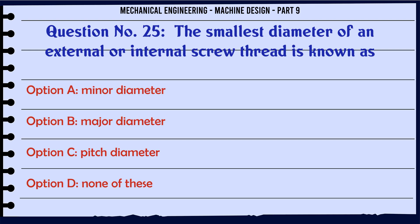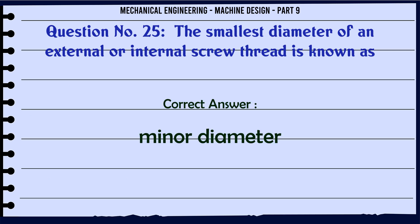The smallest diameter of an external or internal screw thread is known as: A. Minor diameter, B. Major diameter, C. Pitch diameter, D. None of these. The correct answer is Minor diameter.